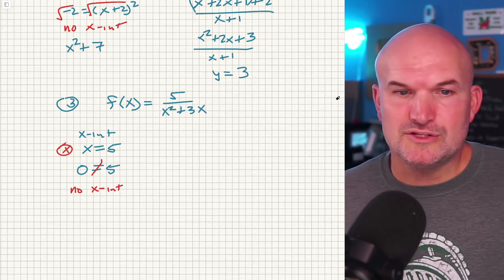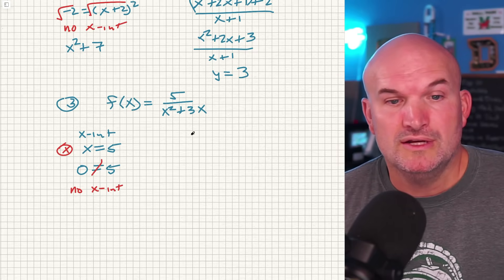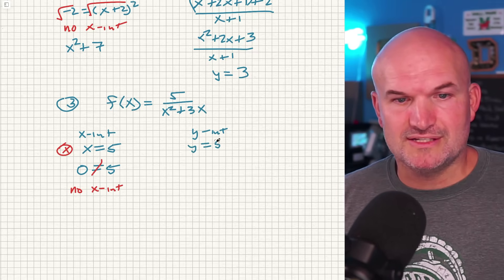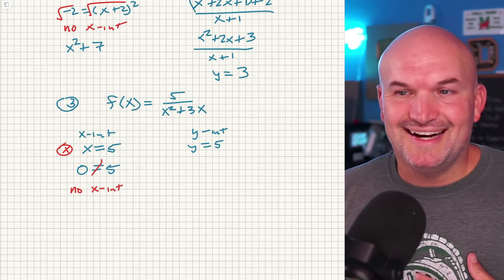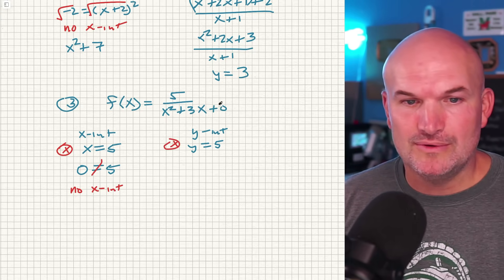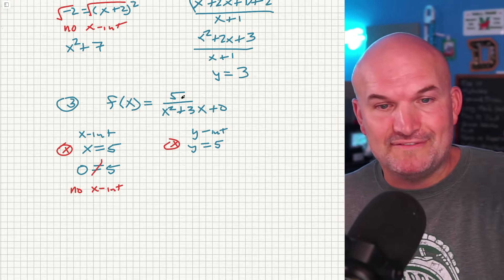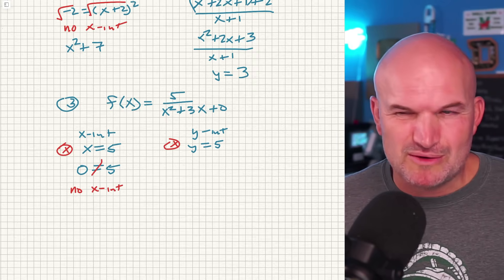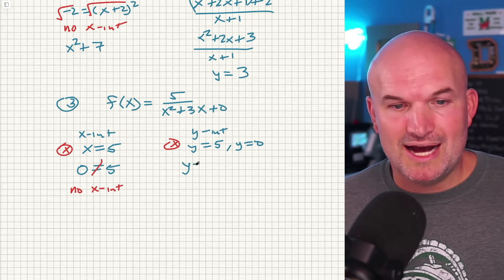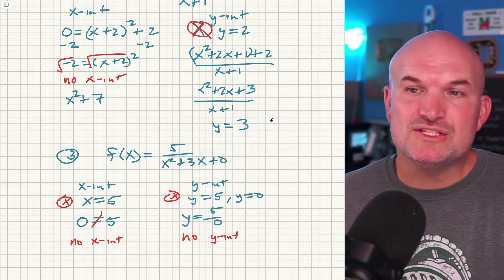For the y-intercept in that example, students remember constant over constant, and they see 5 in the numerator but nothing constant in the denominator. Some say y equals 5, but that's wrong. The constant in x²+3x is actually 0, so constant over constant is 5 over 0 — and we cannot divide by zero. So this is an example of no y-intercept.